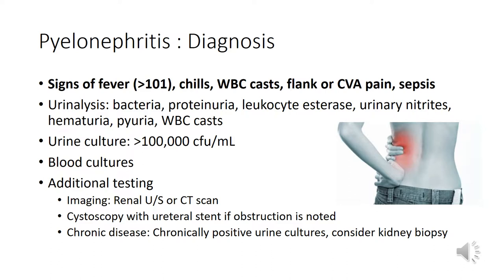Additional testing includes imaging. Consider a renal ultrasound to check for hydronephrosis or swelling of the kidneys, or a CT scan, which would show stranding of the kidneys indicative of pyelonephritis and any obstructing kidney or ureteral stones — which would require urgent urological intervention to place a stent. If the patient is chronically having positive urine cultures and recurrent pyelonephritis, referral to a nephrologist for a possible kidney biopsy may be the next best step.